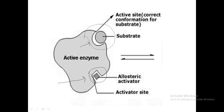When an inhibitor binds to the allosteric site, the enzyme gets inactivated and will no longer bind the substrate. But when the allosteric site binds an activator, a conformational change in the enzyme occurs in such a way that the enzyme will bind its substrate and more product formation will be favored. Such enzymes are mainly present in metabolic pathways.